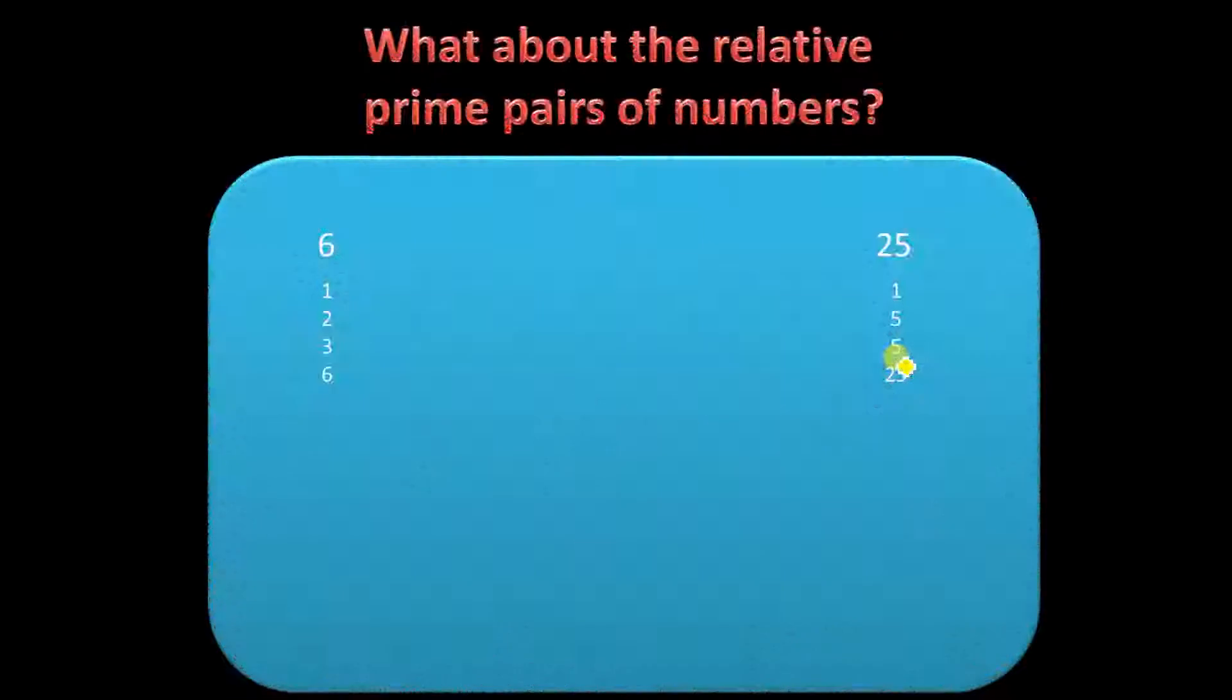Now what about the relatively prime pairs? Like on the board here, on the screen, I've got 6 and 25. These are relatively prime, which means they only have the common factor of 1, nothing else. So the greatest common factor would be 1. The lowest common multiple would actually be the product of 6 and 25. So that's the way it works all the time for lowest common multiples and greatest common factors of relatively prime numbers.